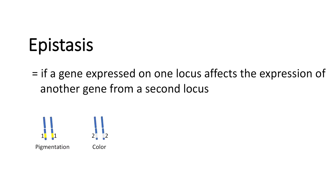Let's talk about epistasis. Epistasis is when a gene expressed on one locus affects the expression of a gene on another locus. We have pigmentation again as an example. We see that the first gene's alleles both encode for pigmentation, and if the products of the pigmentation alleles are expressed, they influence the color.